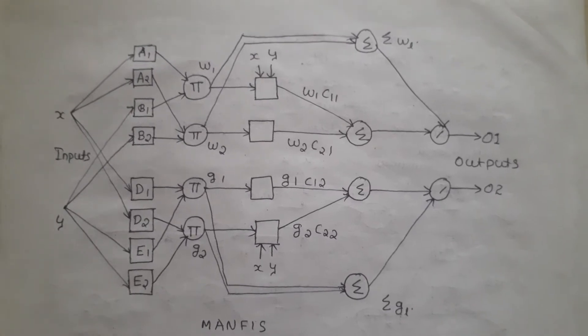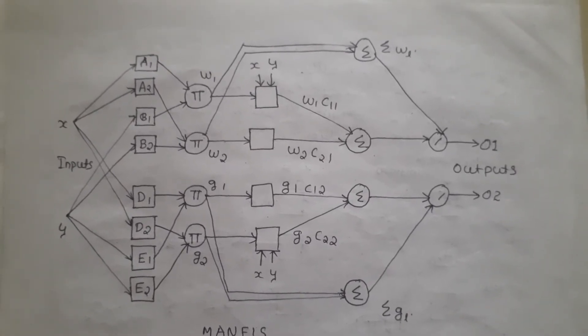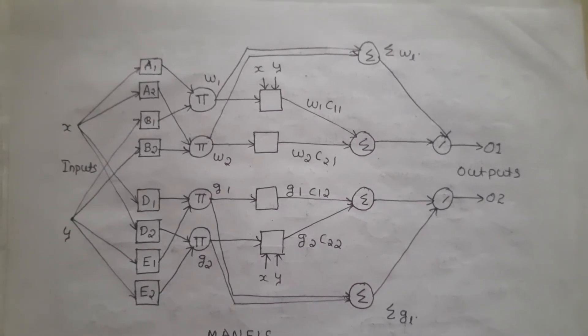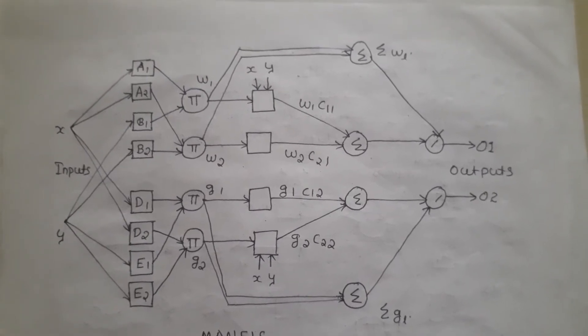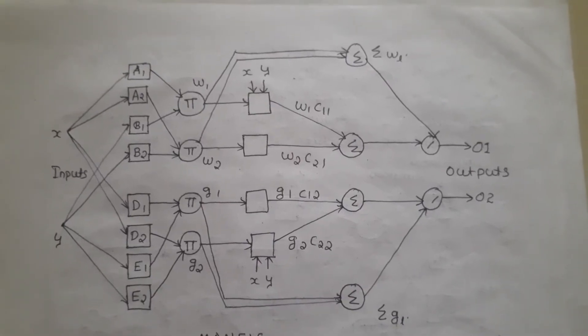MANFIS model is illustrated in this figure. No modifiable parameters are shared by the ANFIS models. Each ANFIS has an independent set of fuzzy rules which makes it difficult to realize possible certain correlations between outputs.